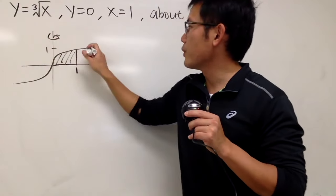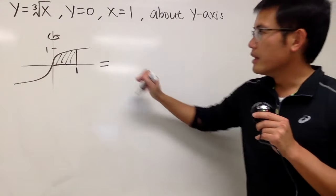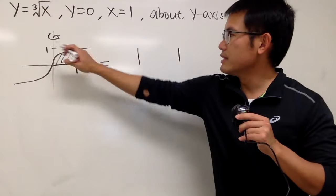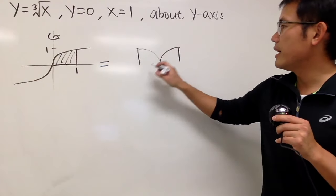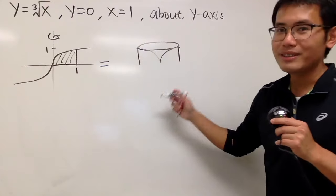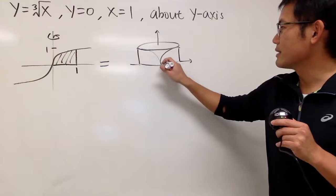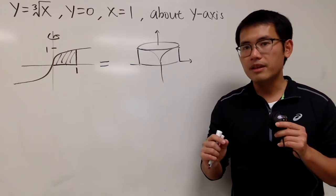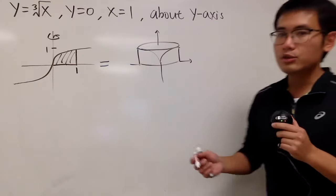We do the rotation. We can see there's a hole in the middle, so you could use the disk method with subtraction — that becomes the washer method. But here we can use the shell method. The shell method is like grabbing a piece of paper, rotating it — you get a cylinder, and if you open it you get the outside shell.